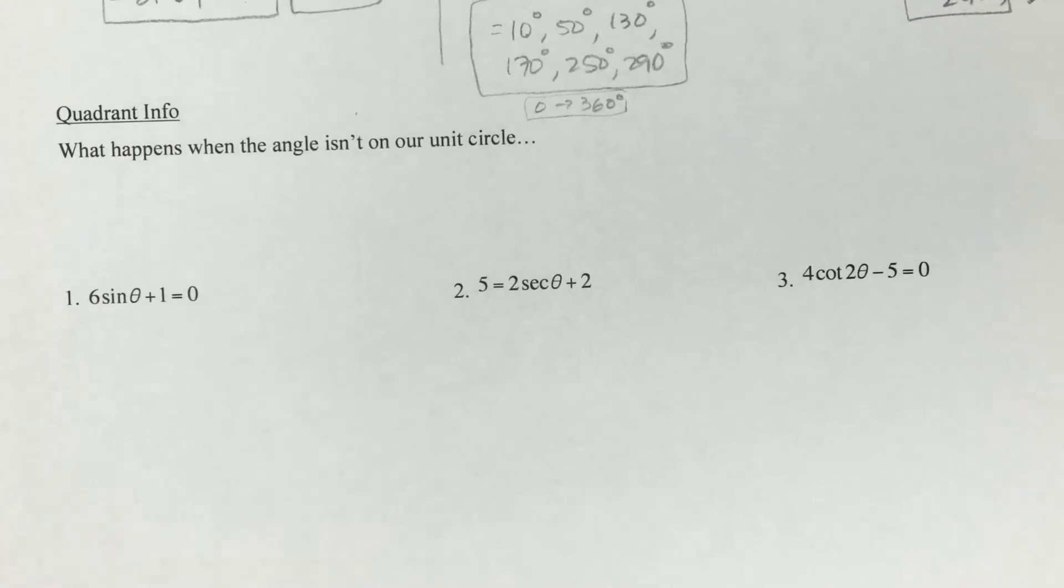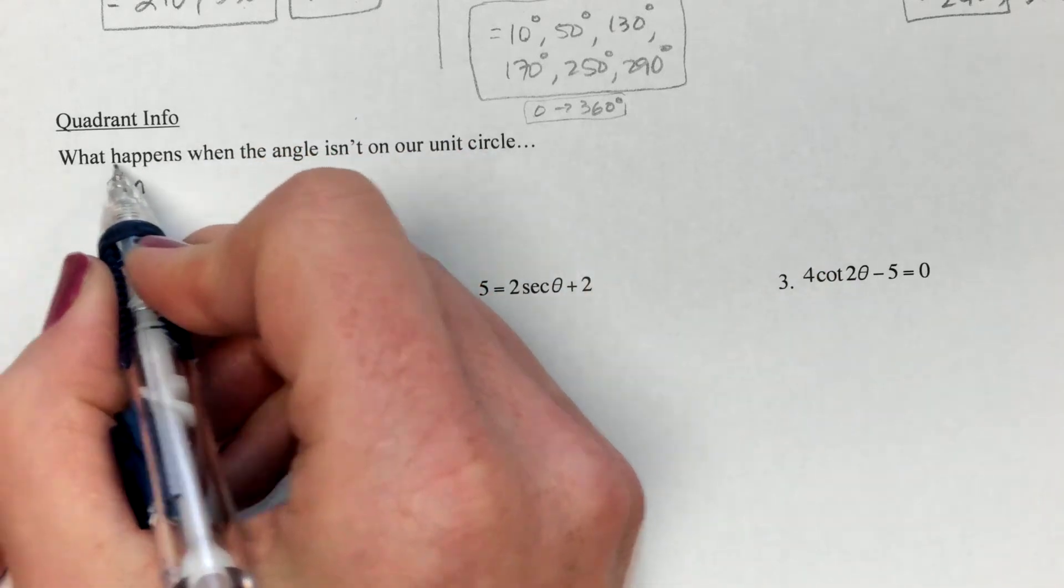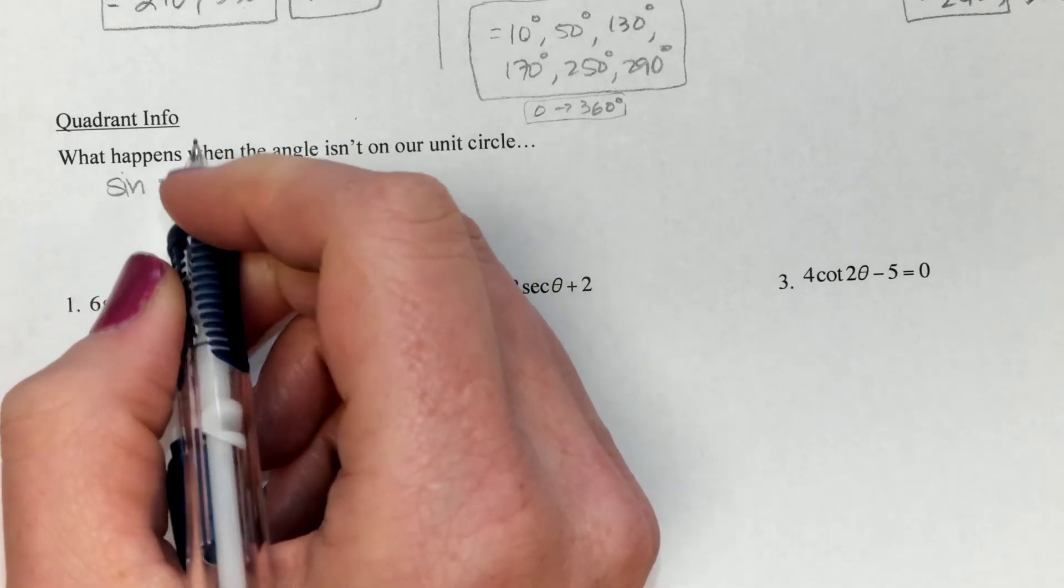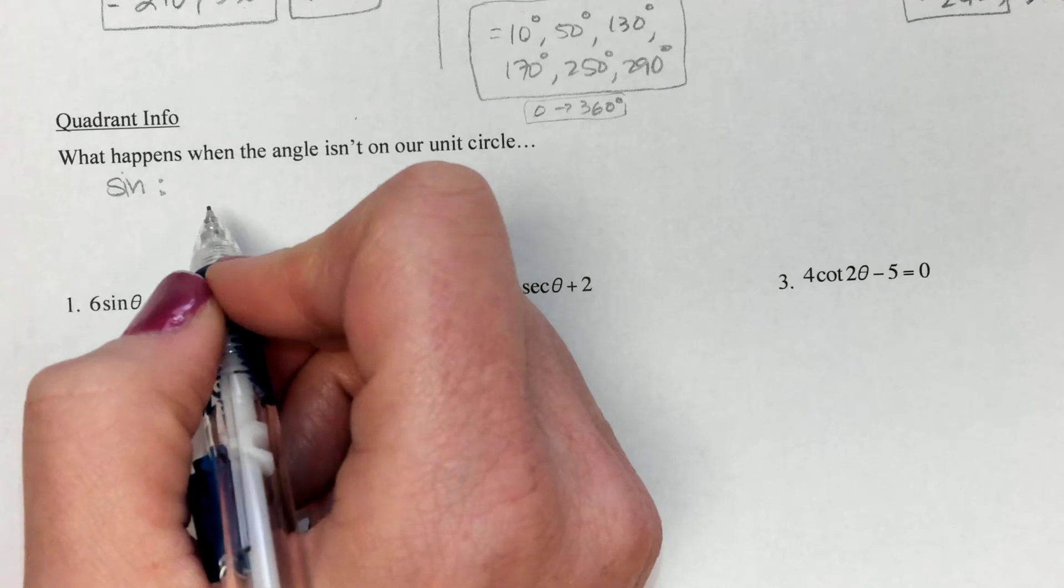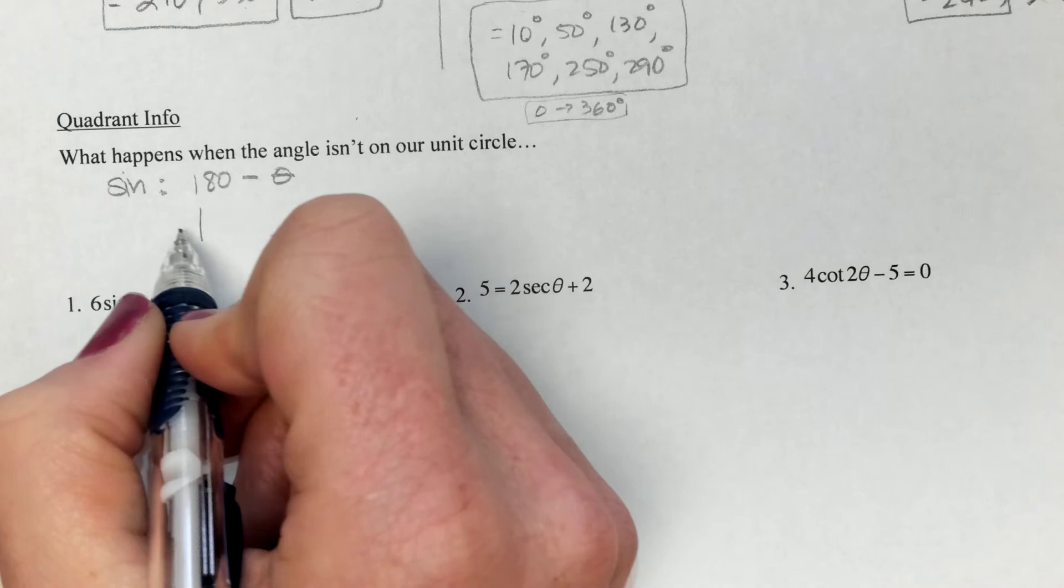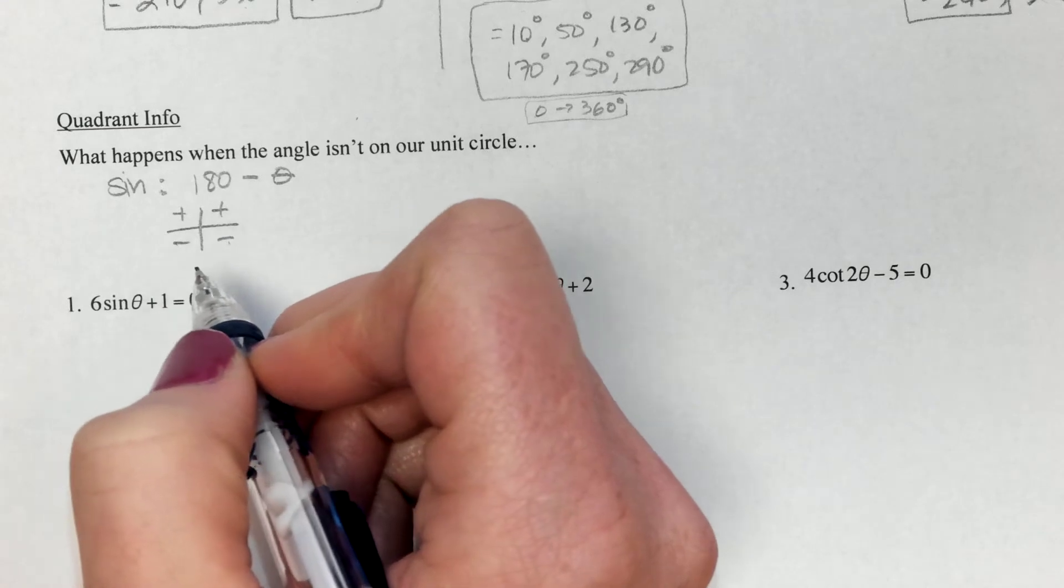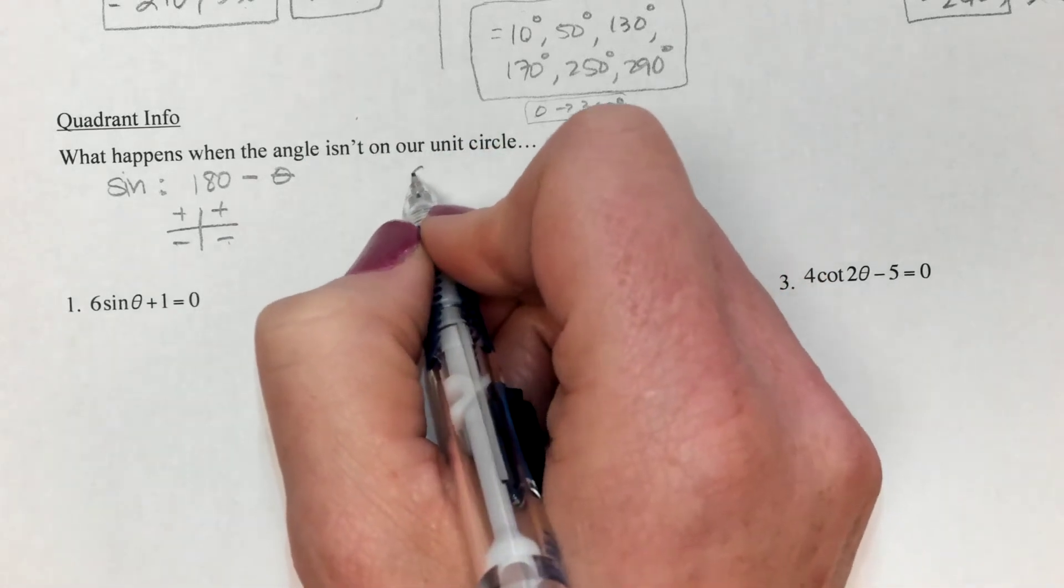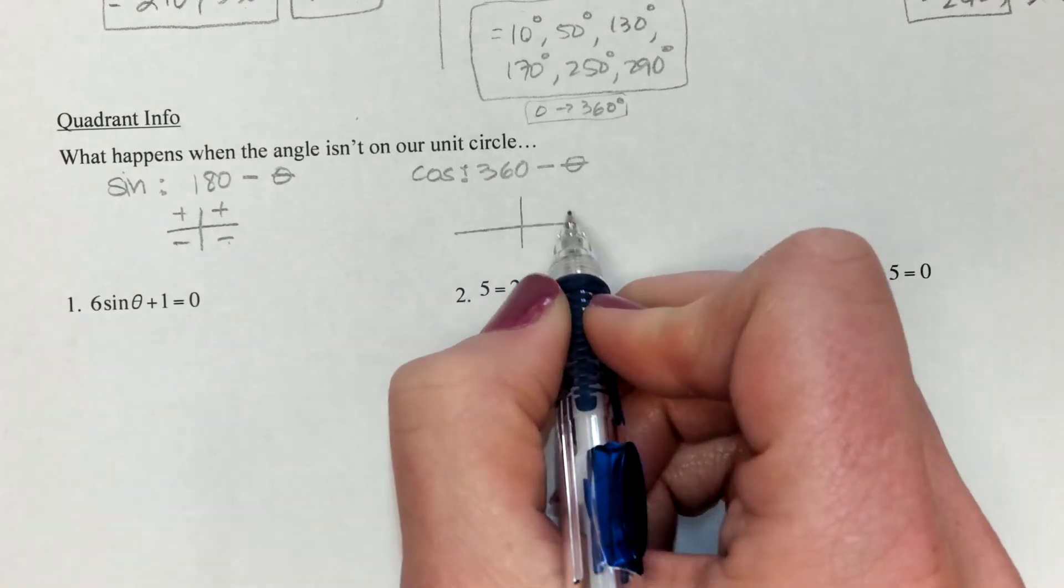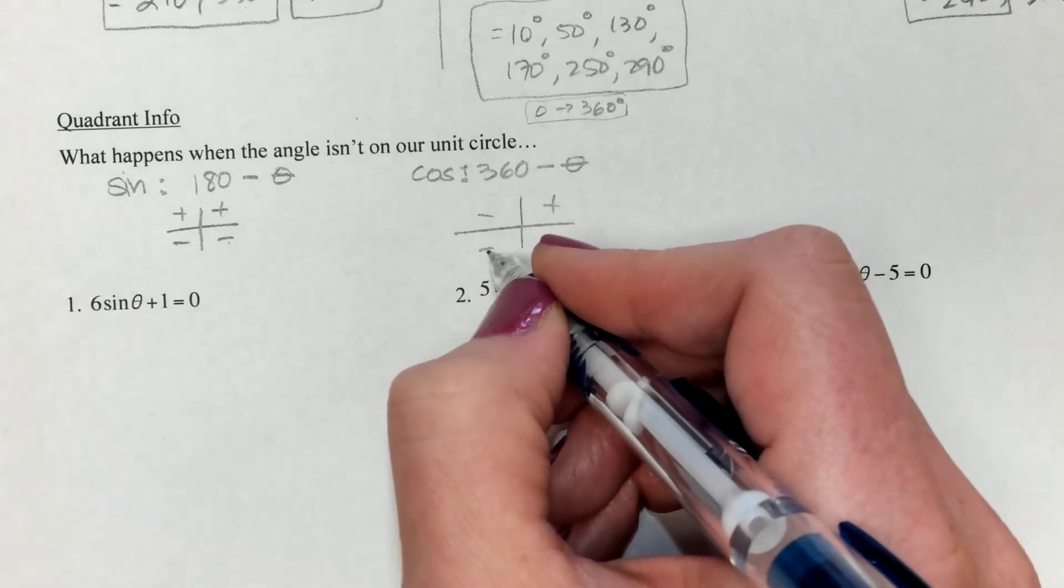Just a little bit of quadrant info, just to remind you, we did this in chapter four. What happens when our angle isn't on our circle? When you have to resort to using your calculator, you need to know a little bit of extra information about how you're going to find the other value. Sine is 180 minus your angle, whatever you got. That's because sine is positive, positive, and minus, minus. So no matter which angle I get, if I do 180 and I subtract that angle, I'll find my match to it. Cosine is 360 minus your angle. That's because cosine is positive, positive, minus, minus in this way.